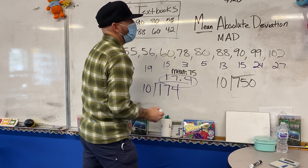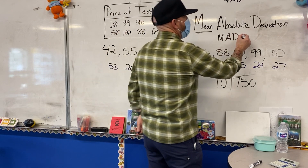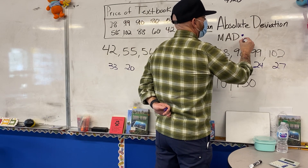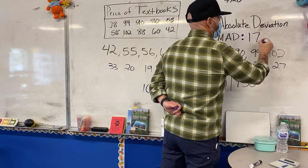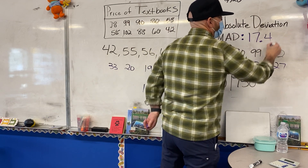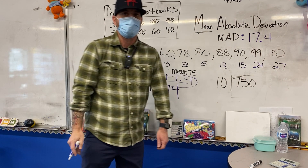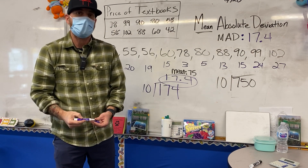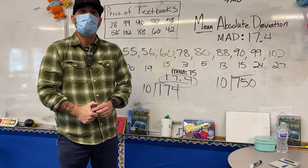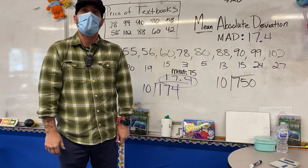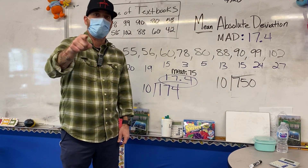So our MAD — our mean absolute deviation — is going to be 17.4. A lot of steps, but that's how you get there to find the MAD. Thank you.